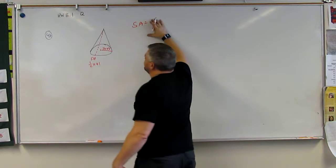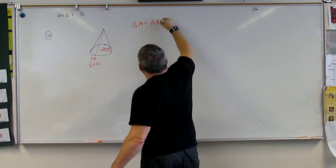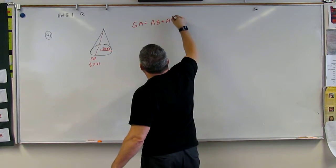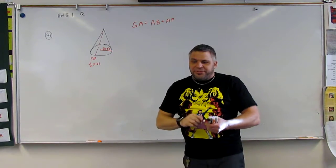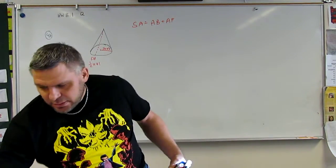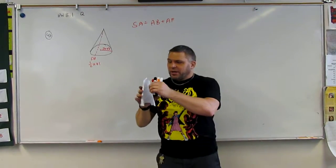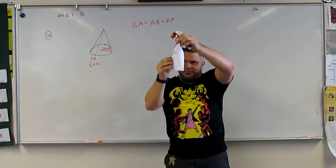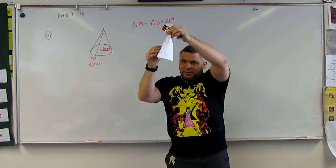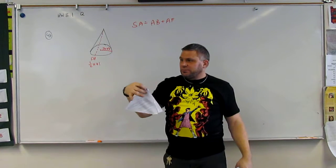The surface area is equal to the area of the base plus the area of the faces, or the side. Now with this cone, we have this shape. And then if we cut it, we know that the top is a triangle.